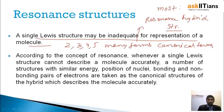So according to the concept of resonance: whenever a single Lewis structure cannot describe a molecule completely, we can take many more forms of that molecule. Those are called canonical structures, and together they describe the molecule accurately.